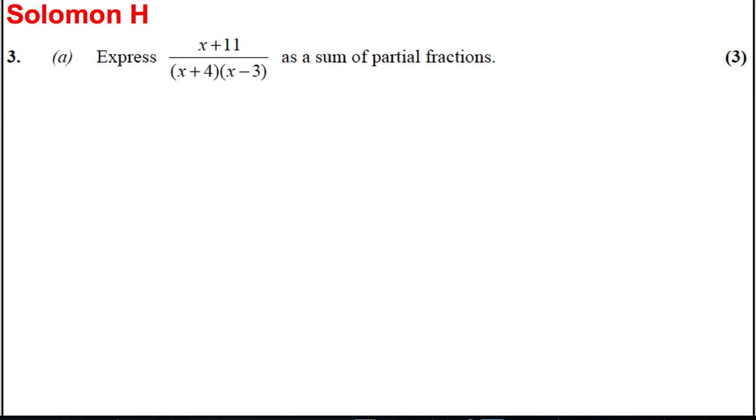We want to write down the following: (X + 11) / [(X + 4)(X - 3)] as partial fractions. It's one of our standard results and it's A over the first factor plus B over the second factor. You get one mark in the exam for writing that.